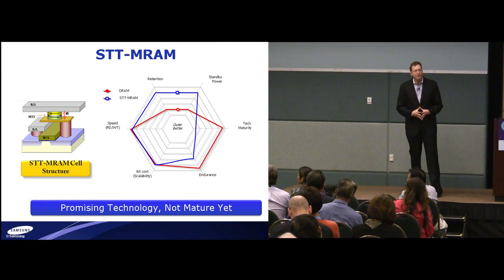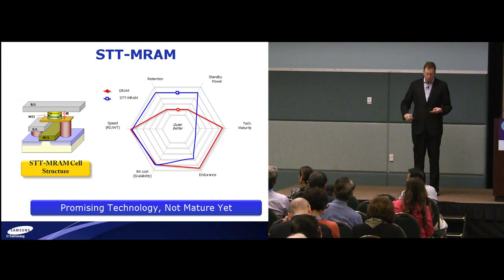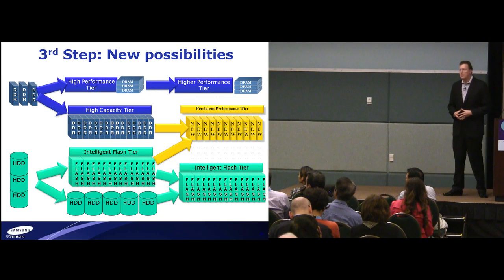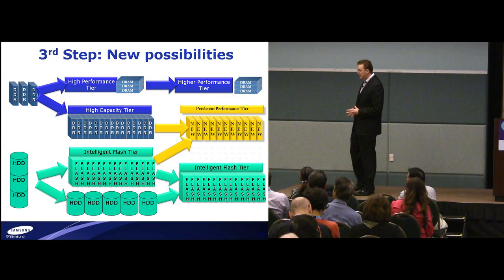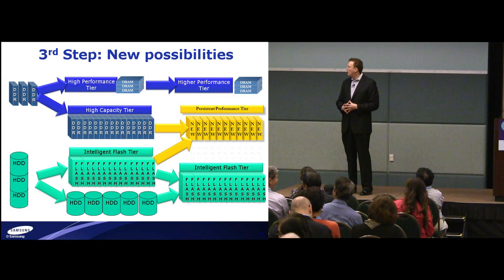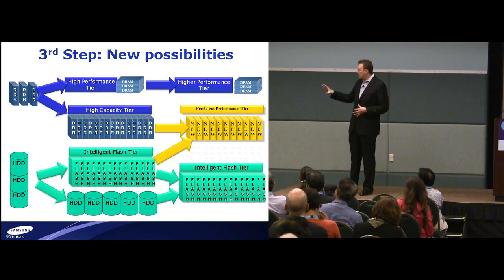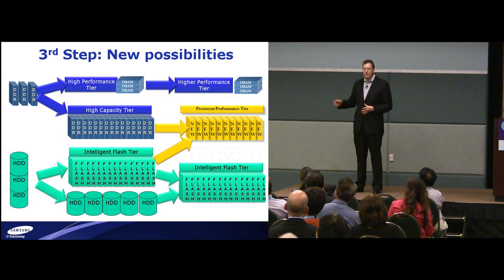We started with basically CPU, DRAM, and disk. Now we move to tiered DRAM. Now we replace disks with tiered flash and disks. And in the last step, we create one more tier — the persistent performance tier. So in the end state, prior to 2020, we're going to have that high performance DRAM tier, a persistent performance tier, and the majority of storage will be done in intelligent flash arrays.